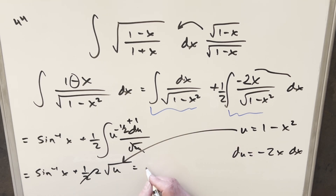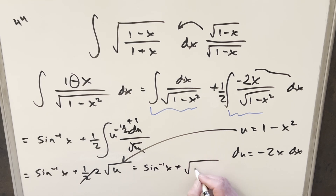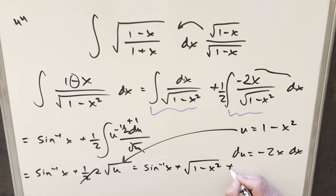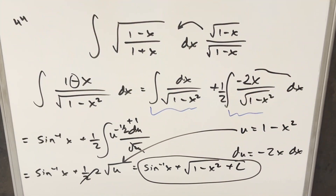Back-substituting to finish it off, the final solution is arc sine of x plus square root of 1 minus x squared, plus C. There you have it — a good one from MIT 2006. Thanks everyone for watching, have a good day.